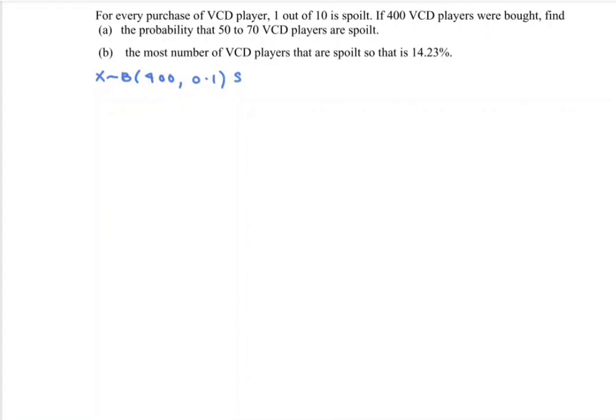Binomial is not suitable because n is more than 50, so we convert the situation to normal. To find the mean μ = np = 400 × 0.1 = 40. Next, find the variance = npq = 400 × 0.1 × 0.9 = 36. So the variance is 36, which we represent as standard deviation squared: 6² = 36, so σ = 6.